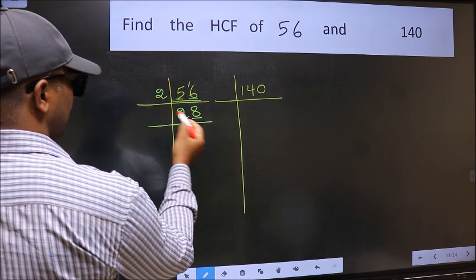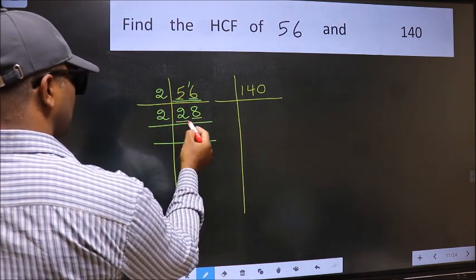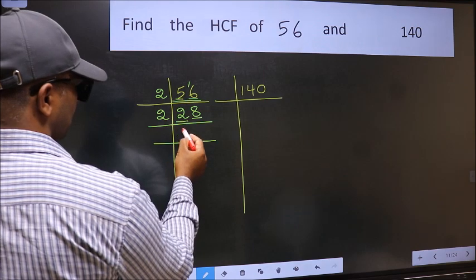Now last digit 8 is even, so take 2. First number 2. When do we get 2 in the 2 table? 2 times 1 is 2.